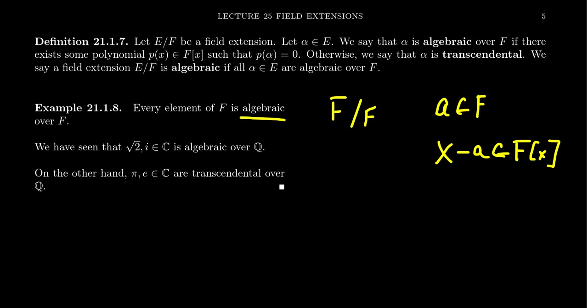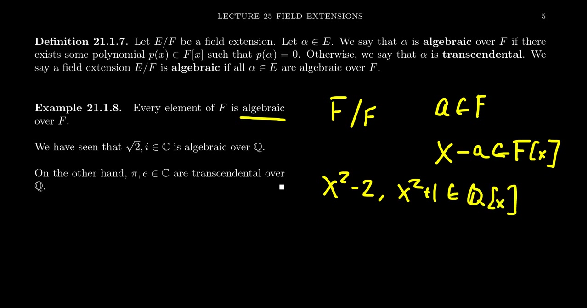For arbitrary field extensions that might not be the case. For example, in the field C, the elements √2 and i are algebraic over Q: x² − 2 is a rational polynomial with root √2, and x² + 1 is a rational polynomial with root i. On the other hand, π and e are transcendental elements — there have been impressive proofs showing no polynomial with rational coefficients has π or e as a root, though those proofs go beyond the scope of this lecture series.